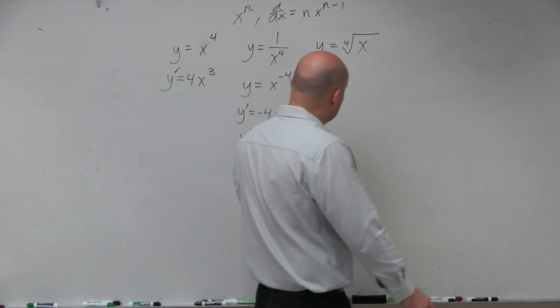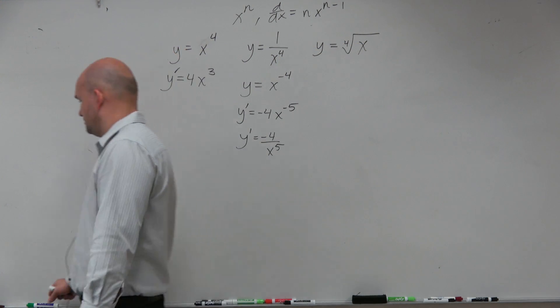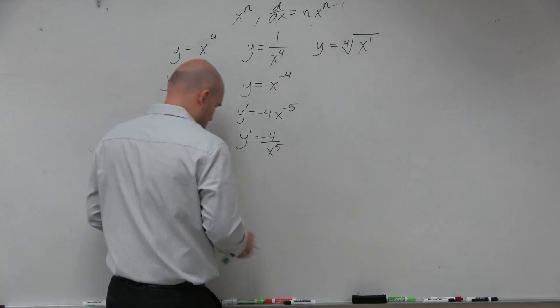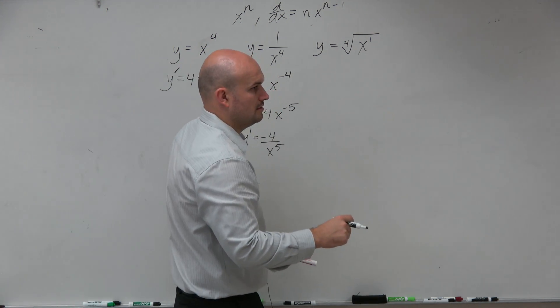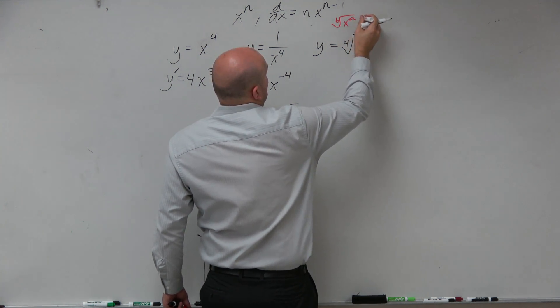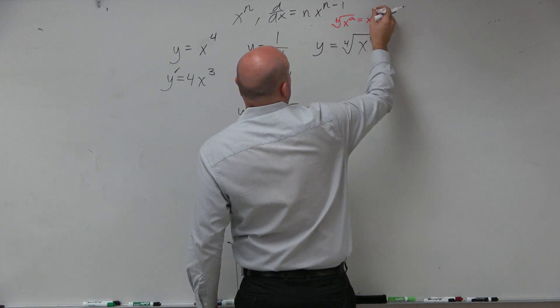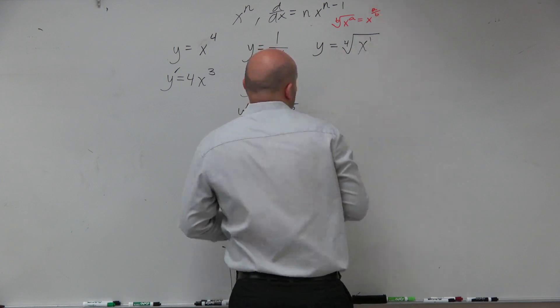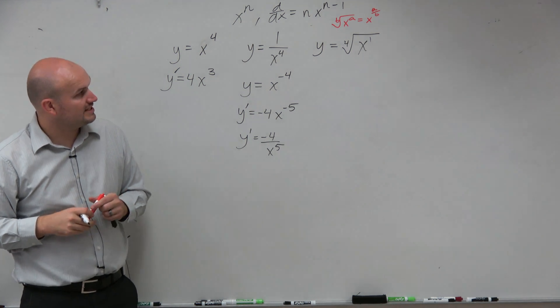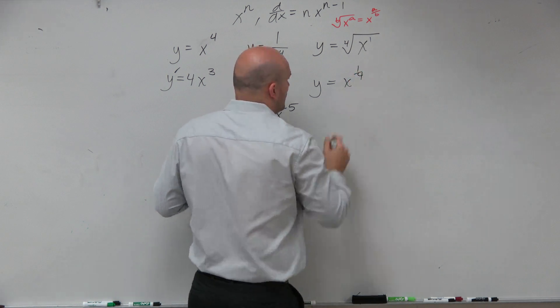And then last but not least is when we have a root. Remember that radical has a 1 to it, and x equals a over b. So in this case, what we need to do is we can rewrite this as y equals x to the 1 fourth.